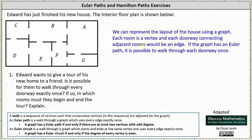To begin, we can represent the layout of the house using a graph. Each room is a vertex and each doorway connecting adjacent rooms would be an edge. If the graph has an Euler path, it is possible to walk through each doorway once and exactly once. Recall that an Euler path is a walk through a graph which uses every edge exactly once, and a graph has an Euler path if and only if there are at most two vertices with odd degree.